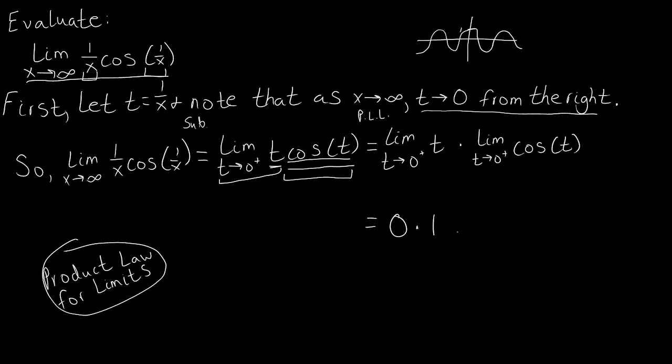So this zero is the limit of t as t approaches zero from the right, and one is the limit of cosine of t as t approaches zero from the right. Now, following the product law that we stated, we simply multiply those two limits together. Zero times one is zero. So the limit of our original function, which was also written as these components, is simply zero.